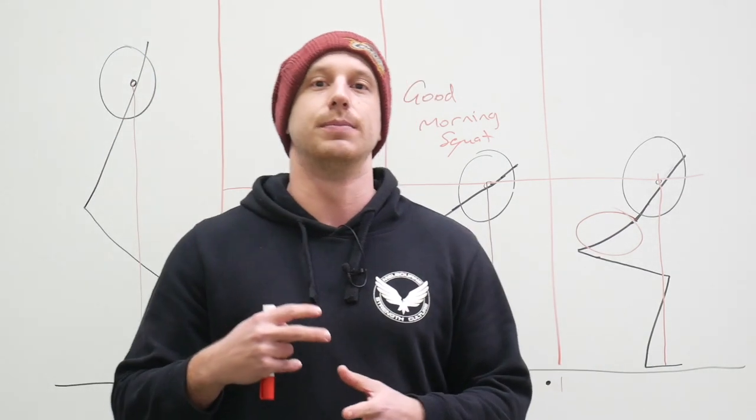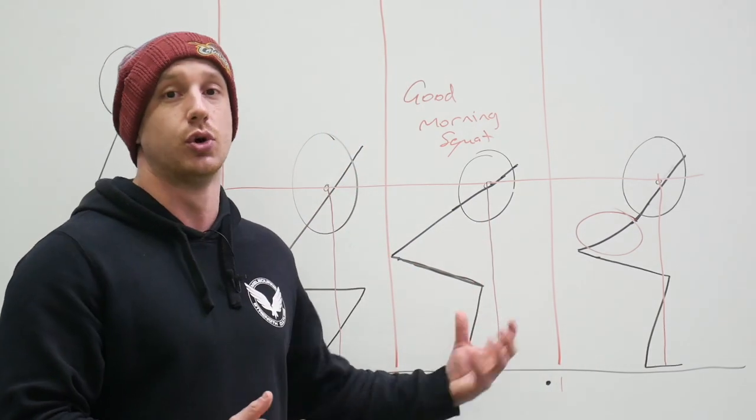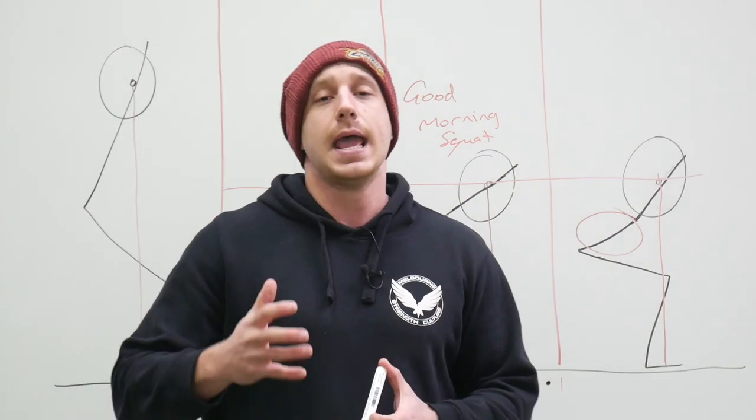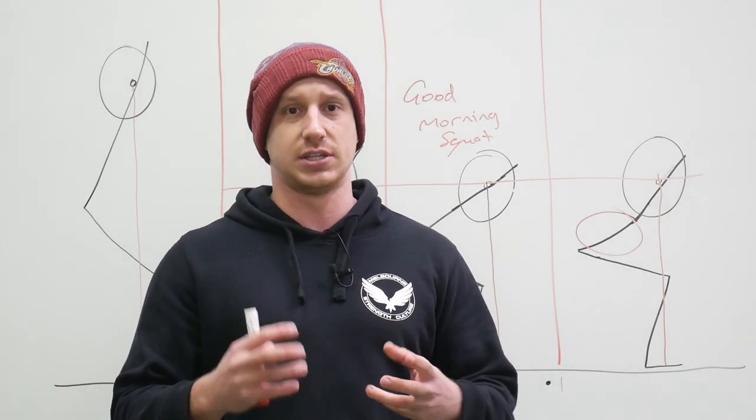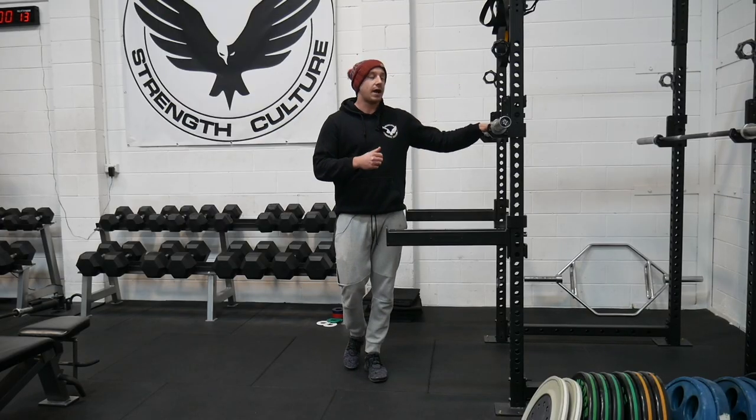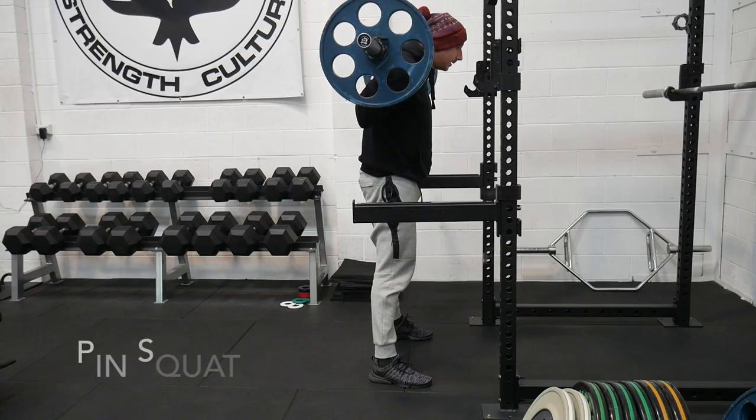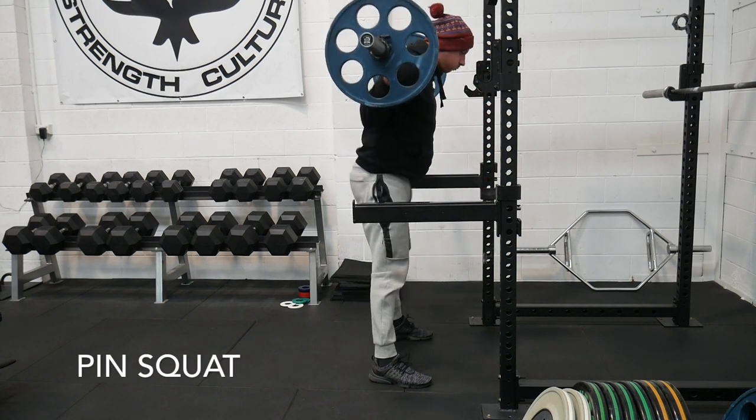The second best accessory movement that we have for somebody who squats this sort of good morning type squat is going to be a paused pin squat. So for this, I'm going to take you actually to the rack and we're going to show you how to set this up. So here I have, I've set up the actual pin squat and how we're going to execute the squat. The first thing I'm going to go over is how to actually set up the pin height.